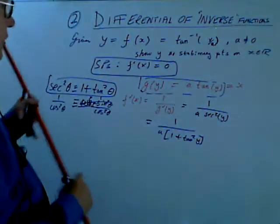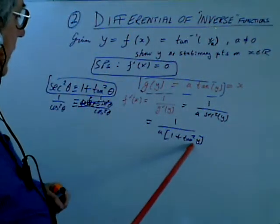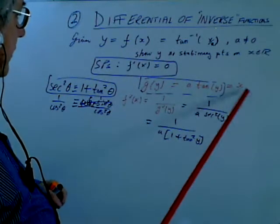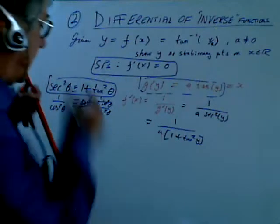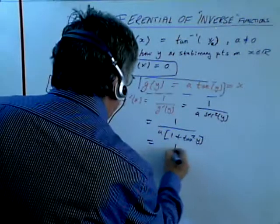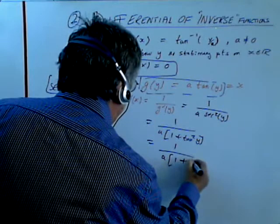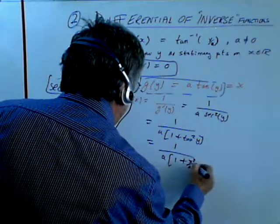So I can write the answer as 1 over a times 1 + tan²(y). And that's just beautiful, that identity, because that means I know what tan(y) is. It's simply x divided by a. So that's 1 over a times 1 + x²/a².